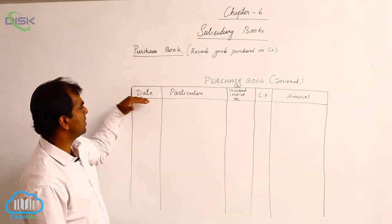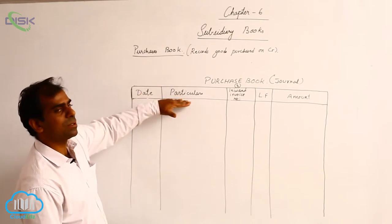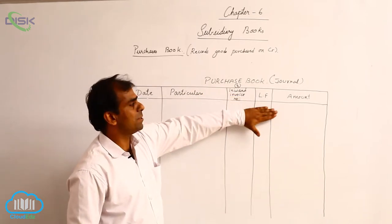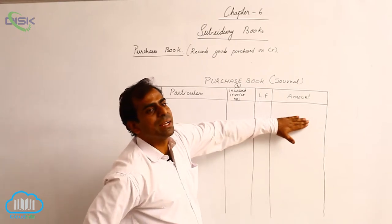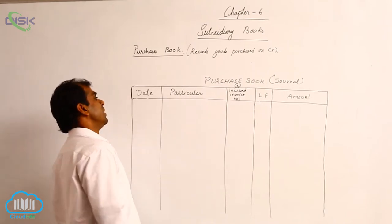So let us recap what are the columns we have for purchase book. We have date column, particulars column, inward invoice number, ledger folio, and an amount column. In some books you might find a few other columns. They are used only if required.